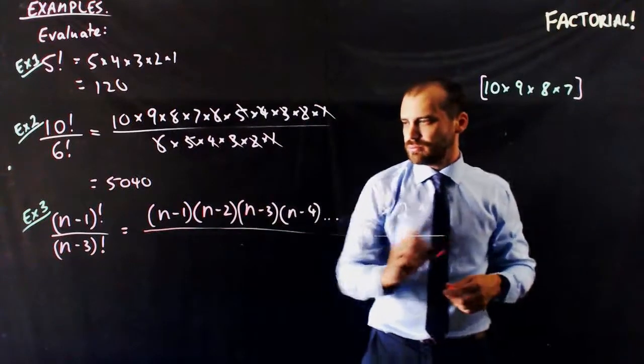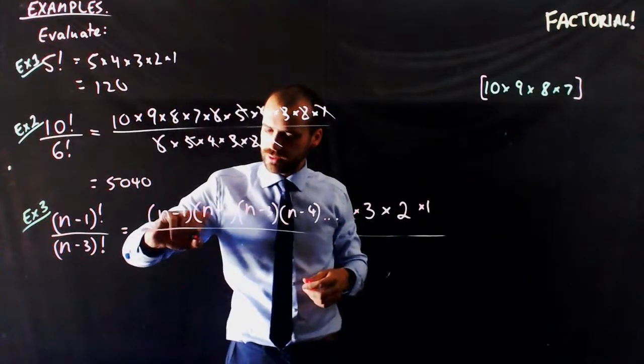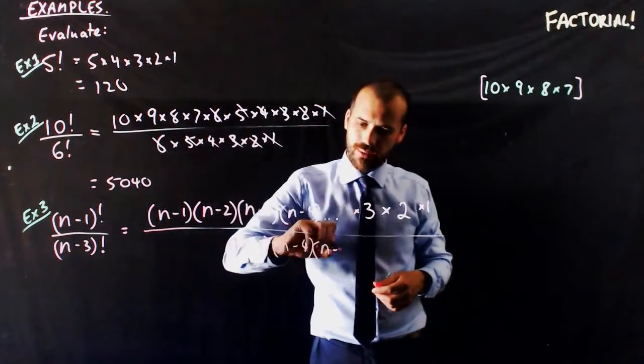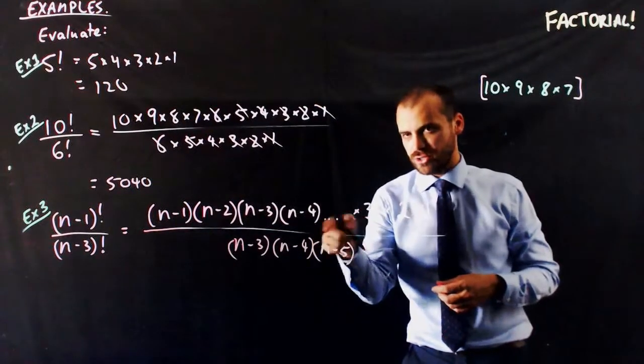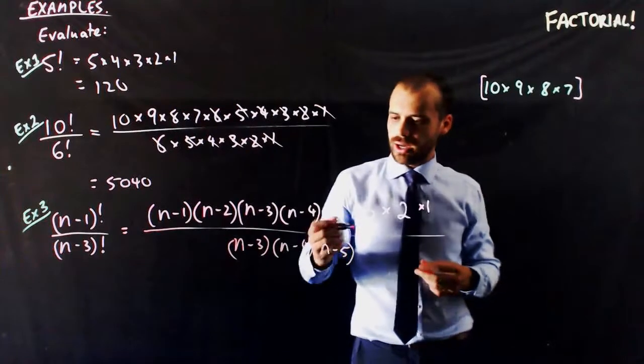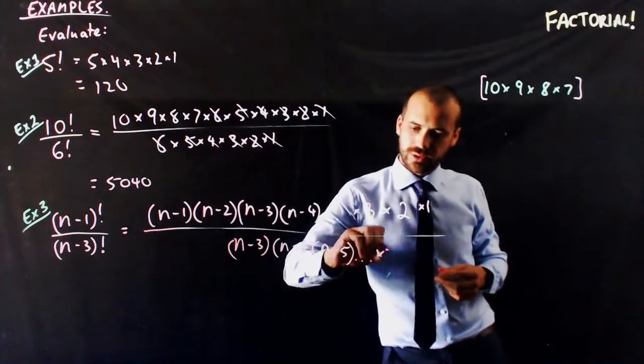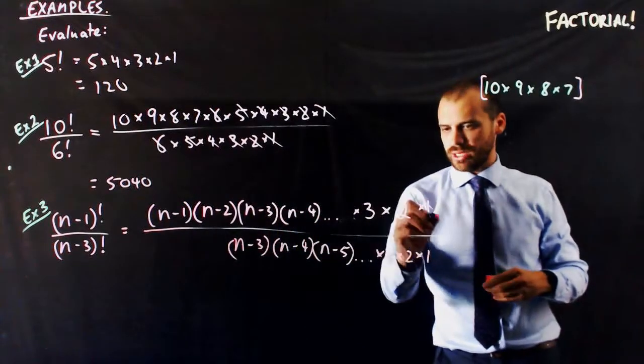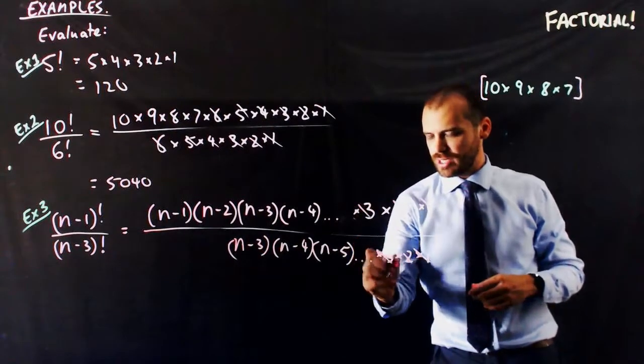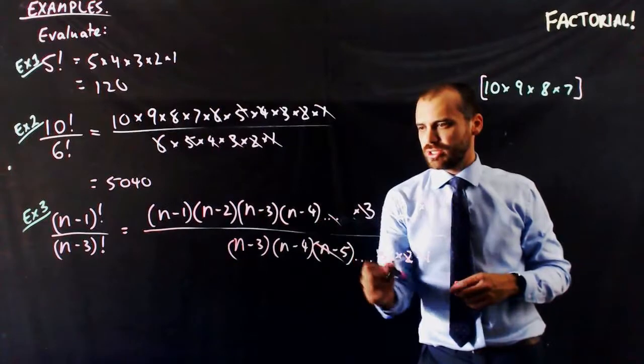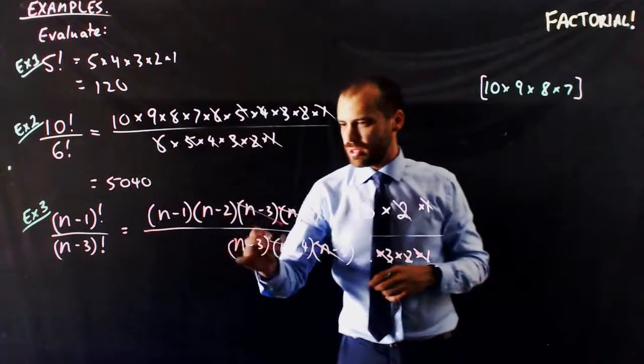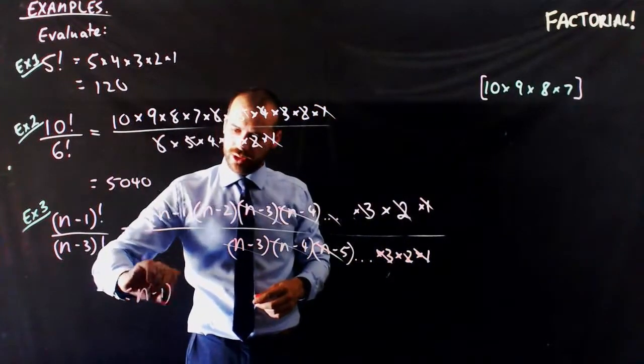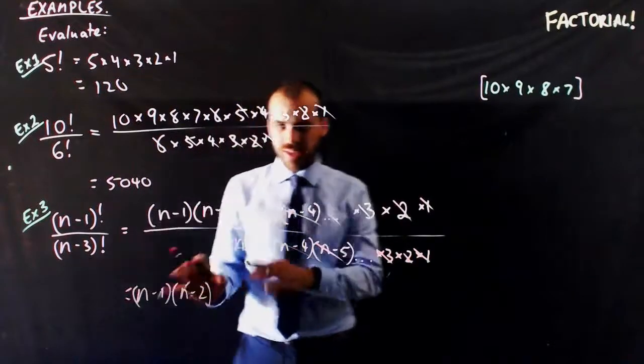We start at a large number could be a million could be a hundred could be 5 I don't know what it is but if we do n minus 1 n minus 2 n minus 3 n minus 4 dot dot dot times 3 times 2 times 1. And then we're going to divide it by this time n minus 3, n minus 4, n minus 5, dot dot dot times 3 times 2 times 1. And now we can start cancelling things out. The 1's cancel out the 2's cancel out the 3's cancel out there's a secret n minus 5 in there which can cancel out n minus 4 cancels out and n minus 3 cancels out so what I have left over is n minus 1 times n minus 2 and that could be my answer.